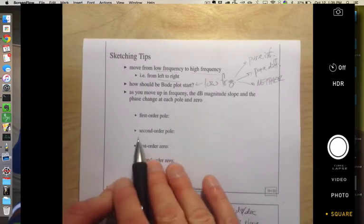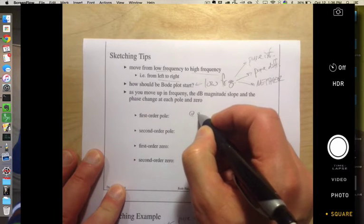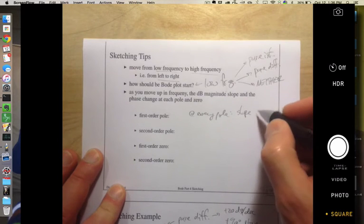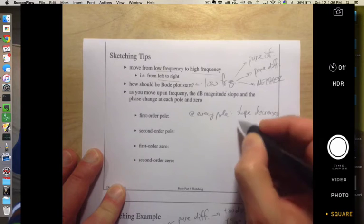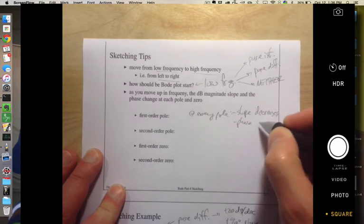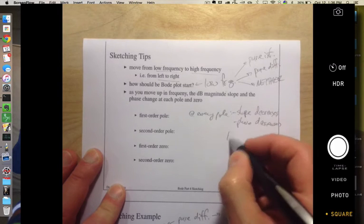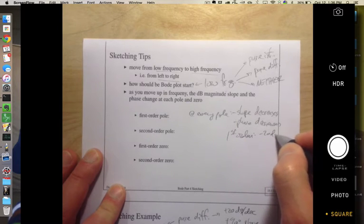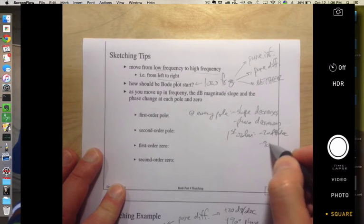Then as you go up in frequency, ask where are my poles, where are my zeros. At every pole, slope decreases, phase decreases. For first order, we mean a minus 20 dB per decade slope and a minus 90 degrees phase.